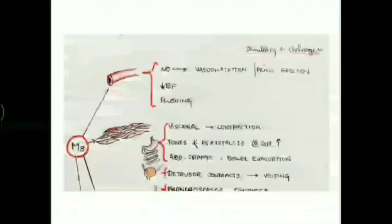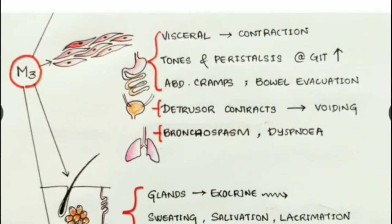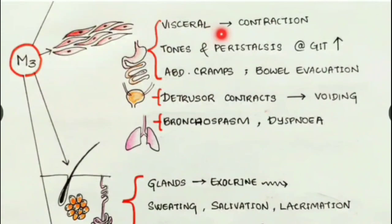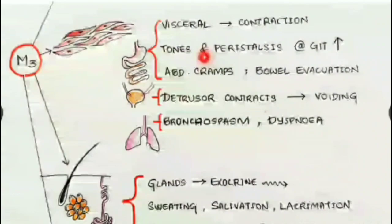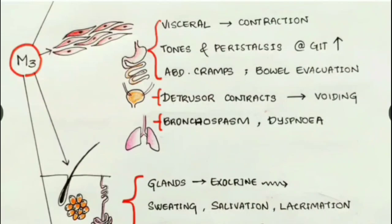M3 receptors stimulated in smooth muscles of the GIT cause visceral smooth muscle contractions, increasing tone and peristalsis. As a result of this visceral muscle contraction, there can be abdominal cramps and bowel evacuation.